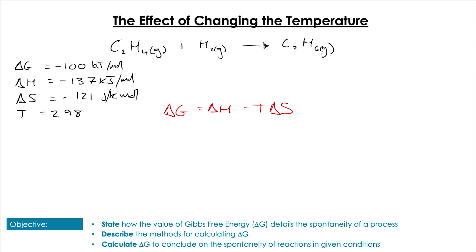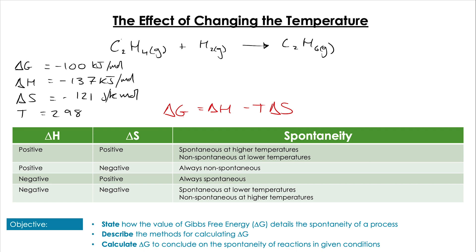We can broaden this and think about how ΔH and ΔS affect spontaneity for all types of reactions. If ΔH is positive and ΔS is negative, the reaction is always non-spontaneous. If ΔH is negative and ΔS is positive, it's always spontaneous. If ΔH is positive and ΔS is positive, it's spontaneous at high temperatures. And as in our example, if both ΔH and ΔS are negative, it's spontaneous at low temperatures and non-spontaneous at high temperatures. Questions on this are common in paper 1.